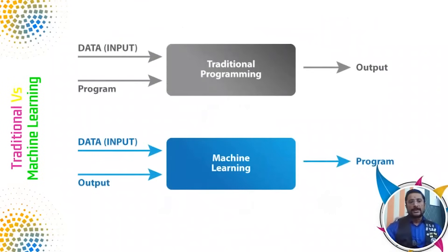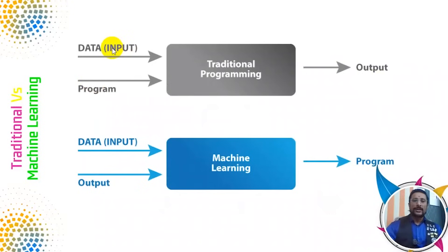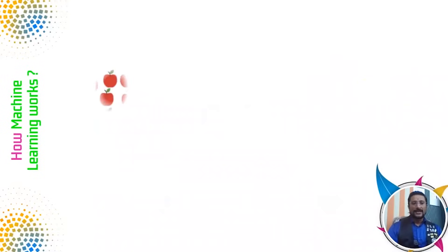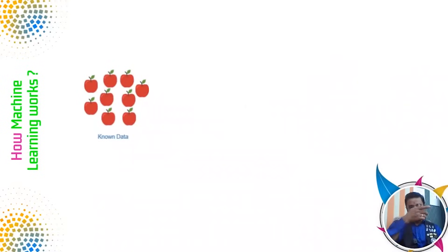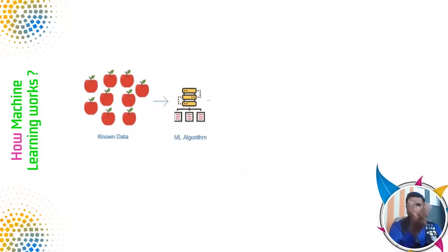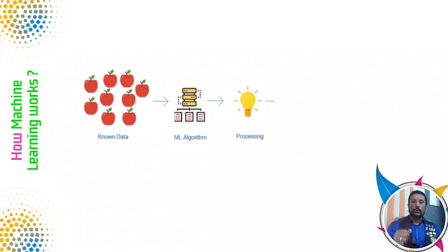Normally a program is available. If you have an input and output, you can use an input and output. If you have an input and output, you can design a machine learning system. Machine learning is available. A computer or a machine can recognize, for example, an Apple.